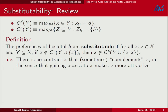On substitutability: we said no student makes you want another student, and now it's the same type of idea. There's no contract X that complements Z in the sense that gaining access to X makes Z more attractive. Formally, hospital H has substitutable preferences if for any pair of contracts X and Z and some set of current opportunities Y — if Z isn't chosen when you just have Y, giving you the opportunity to choose X doesn't now make you want to choose Z.